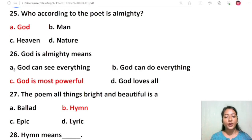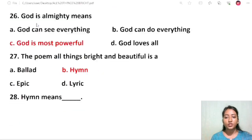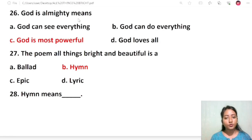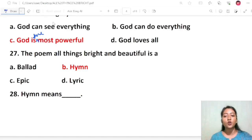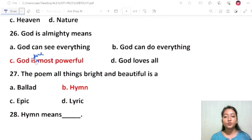Question 24: Who, according to the poet, is almighty? God, man, heaven, or nature. The correct answer is God. Bhagavan is almighty, meaning the most powerful. God can see everything, God can do everything, God is most powerful. All these options are correct, but almighty means God is the most powerful.